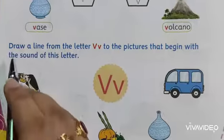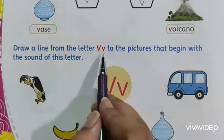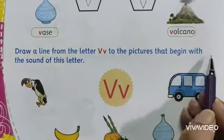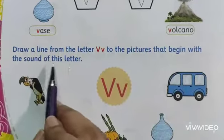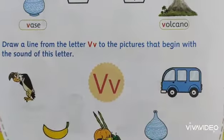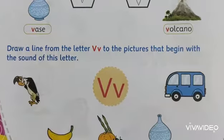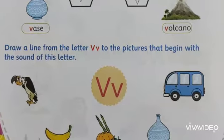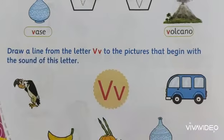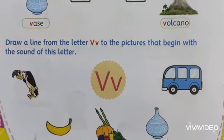Next part: draw a line from the letter V to join the pictures that begin with the sound of this letter. In the middle, you can see V and some pictures are there. You have to draw the line and join to the picture which sound is V.